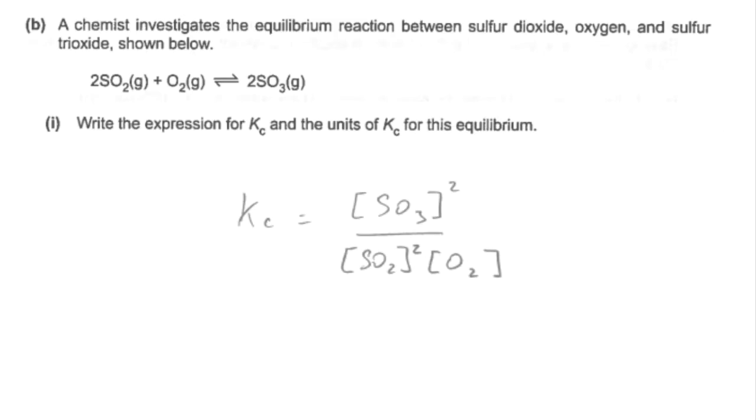And units wise, well, we've got moles per decimeter cubed squared on the top, but cubed on the bottom. And so that cancels down to 1 over moles per decimeter cubed and bringing that to the top, dm cubed, mole to the minus 1.